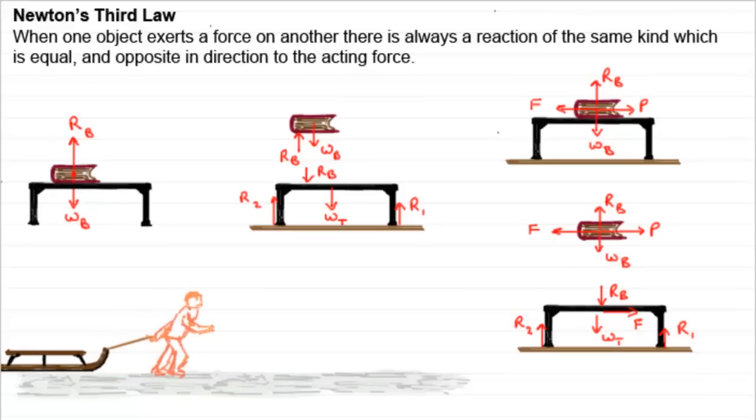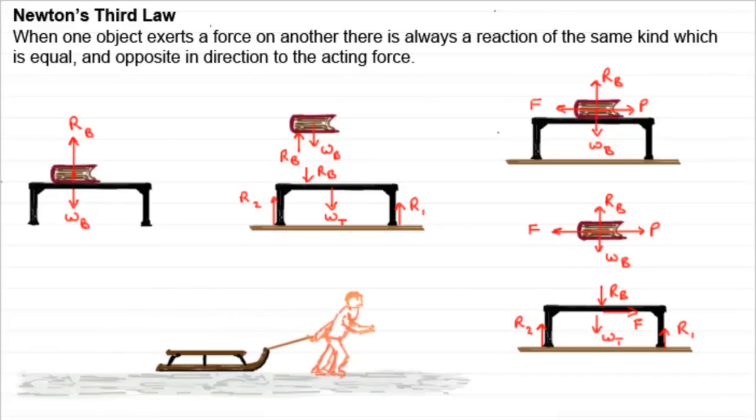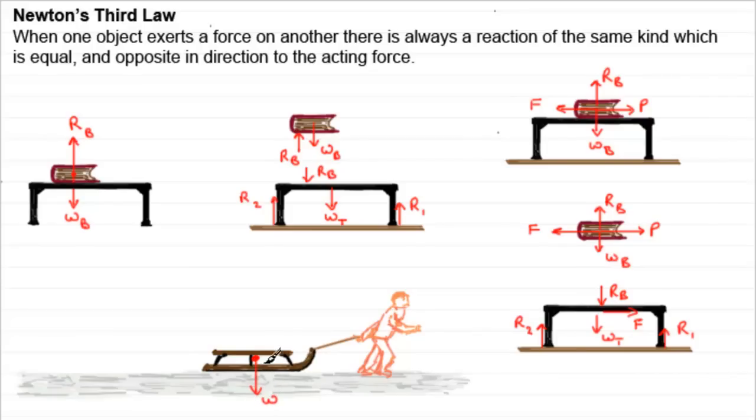Now suppose we had someone pulling their sledge along in the snow. Let's have a look at the forces acting on the sledge. Well, there'll be the weight of the sledge. If we assume that this is a particle, a point mass, the weight would act through that point there, W, acting downwards. There'll be the contact force from the snow here, pushing up on the sledge. That will act upwards then. We'll call it R.